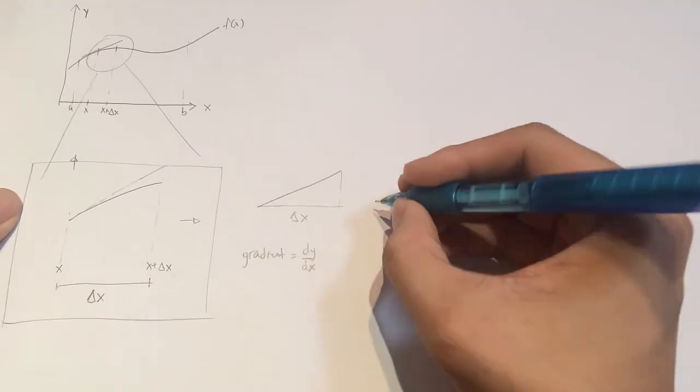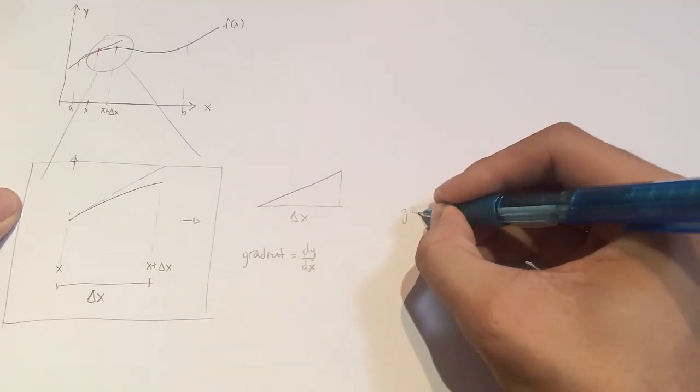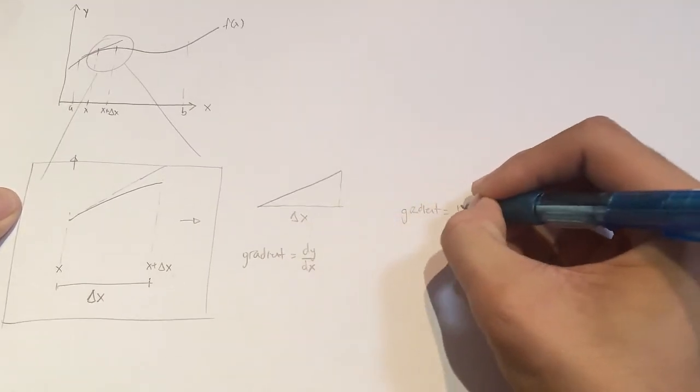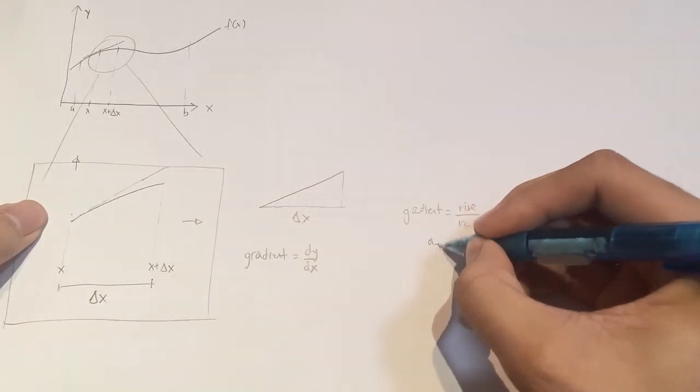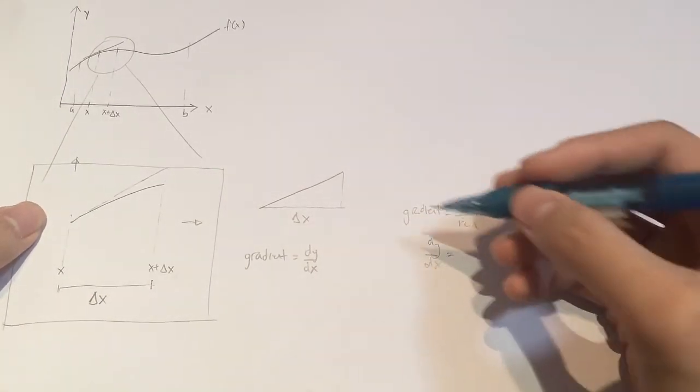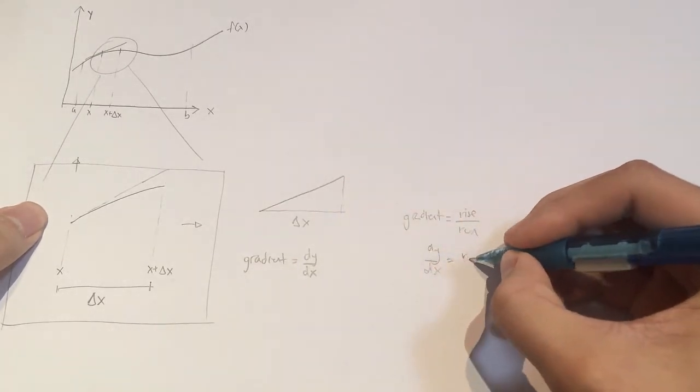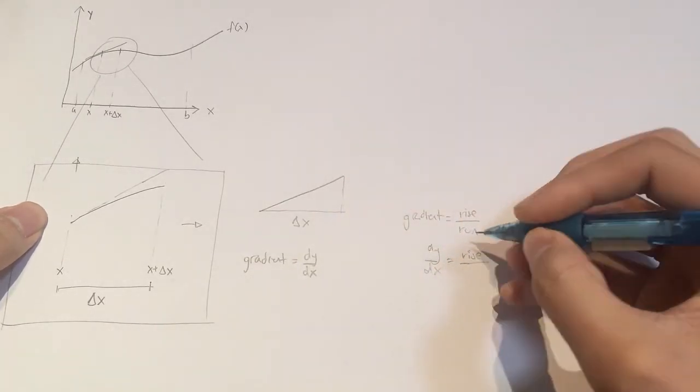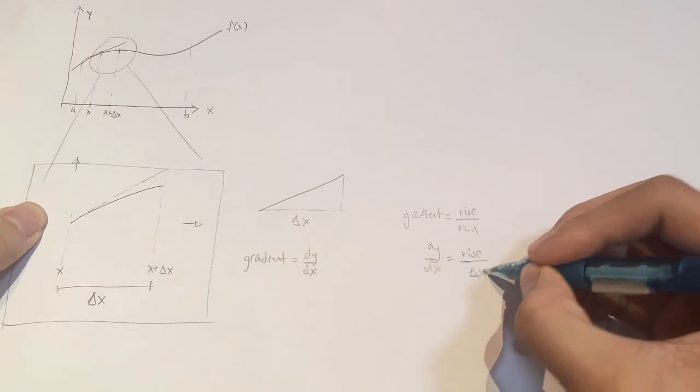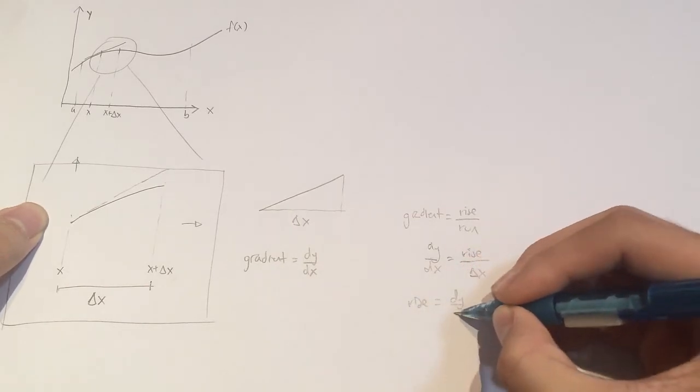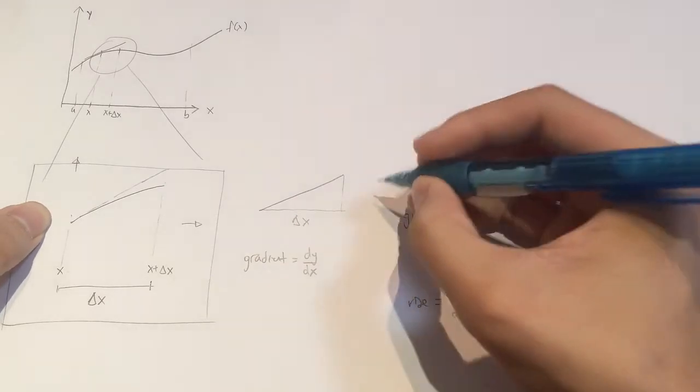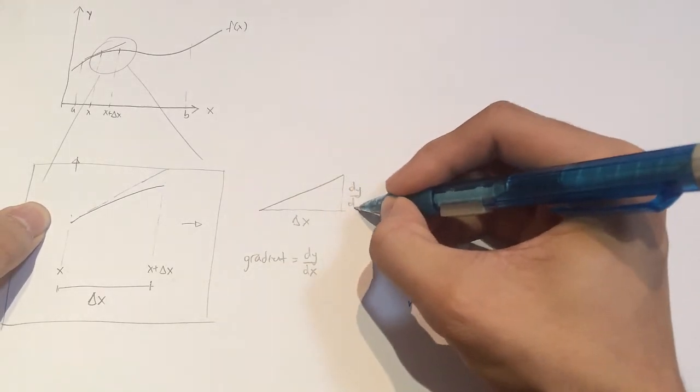We know that slope or gradient equals rise over run. So the gradient dy/dx equals the rise, which is what we want to find, divided by run, which is delta x. Therefore the rise equals dy/dx times delta x. So this side is dy/dx times delta x.